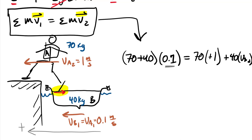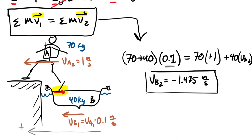Computing this, the left side is larger than the right side, giving vB₂ equal to negative 1.475 meters per second. The boat moves away faster because it has a lower mass. To counteract this, you could tie your boat up, hold tension in a rope to the dock, or have a friend hold the boat while you step off.